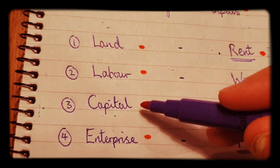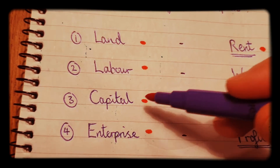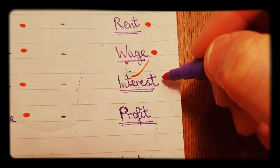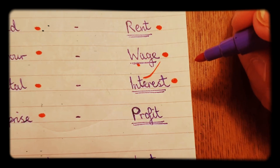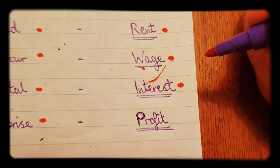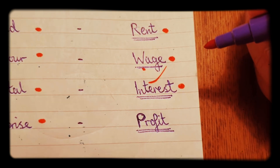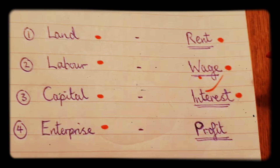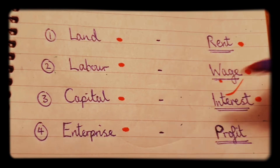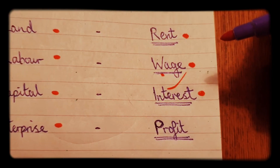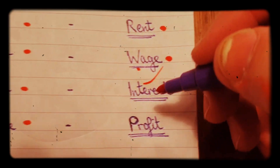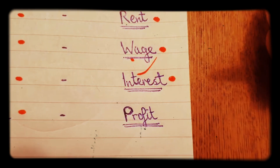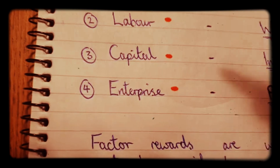In order to benefit from capital, the firm must pay interest payments. For example, if the firm were to acquire capital machinery via a loan from the bank, the cost of that would be the interest.